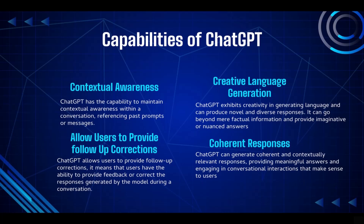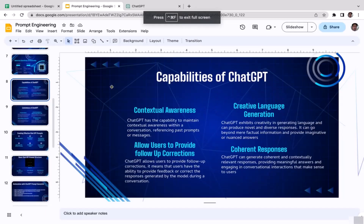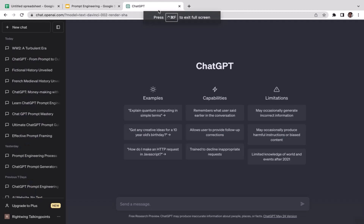There are four things. The first one is contextual awareness. ChatGPT has the capability to maintain contextual awareness within a conversation, referencing past prompts or messages. If you open a new chat in ChatGPT, as you can see, there are three main capabilities listed — the first one being that it remembers what users say earlier in the conversation.